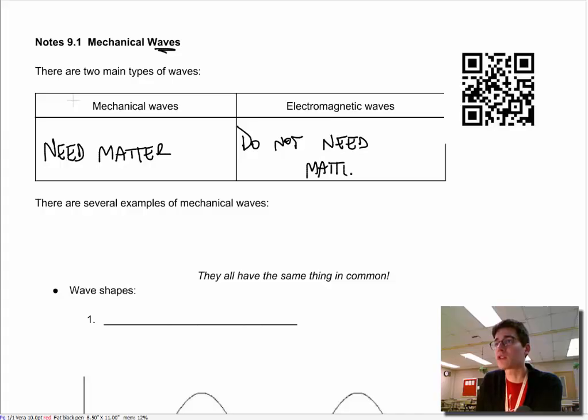Electromagnetic is the other major category of waves and these ones do not need matter. And that's good because electromagnetic waves, an example would be light. Our sun is up in space, there is no matter between the sun and the earth, it's big emptiness. If electromagnetic waves needed matter, we wouldn't see light and it would be very cold and dark and you and I would be very, very dead.